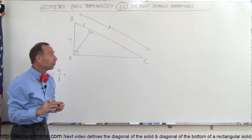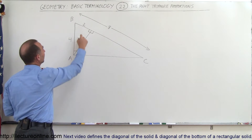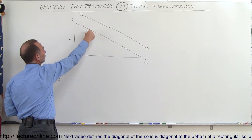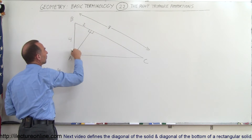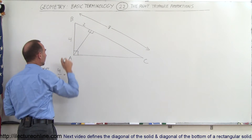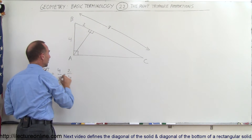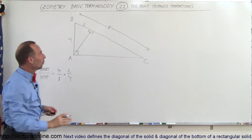Now let's do that for the small triangle. Here's the short side, and here's the hypotenuse. So if we take the ratio of the short side to the hypotenuse, we get 2 divided by 4, and you can see that those are indeed equal.